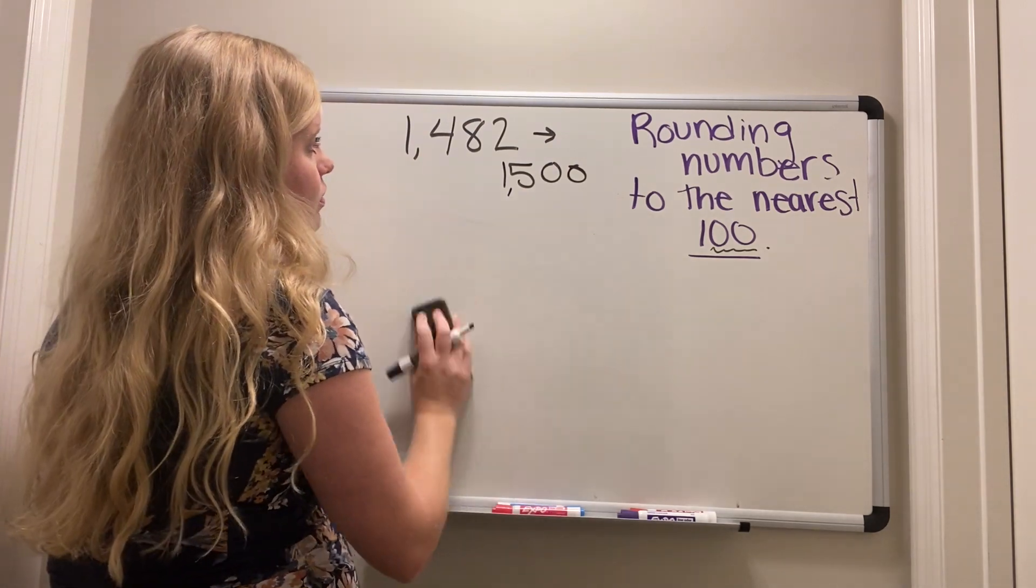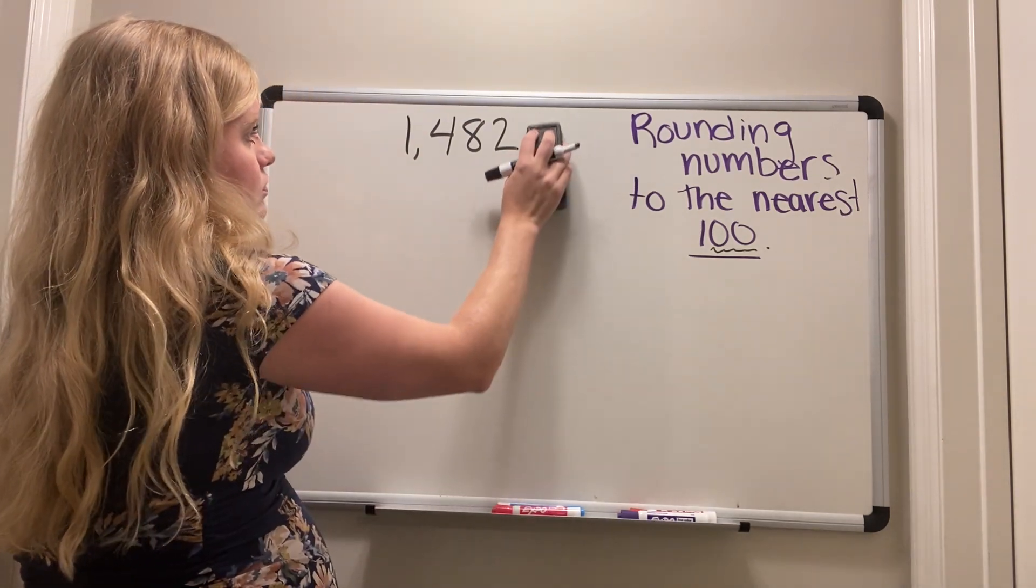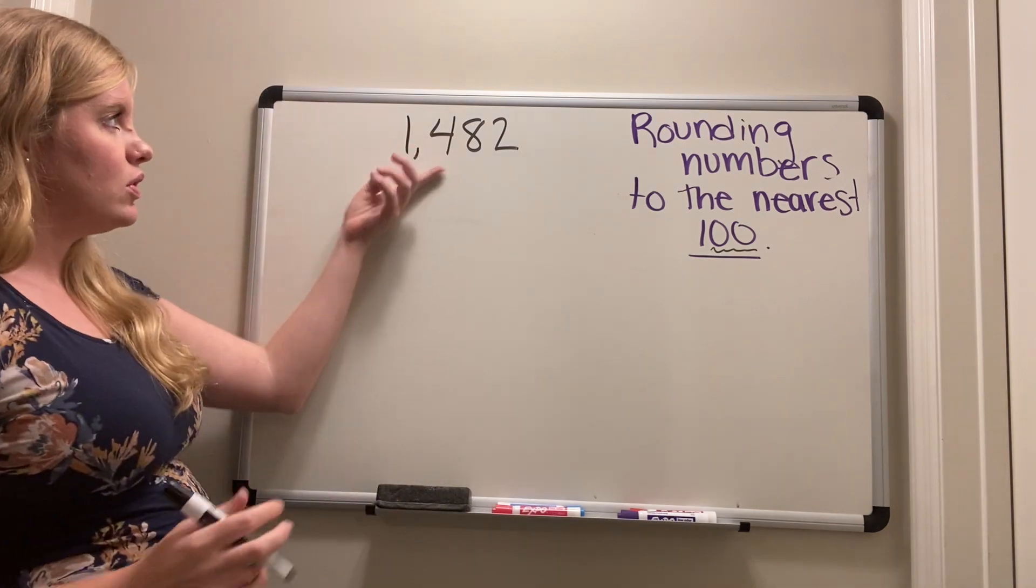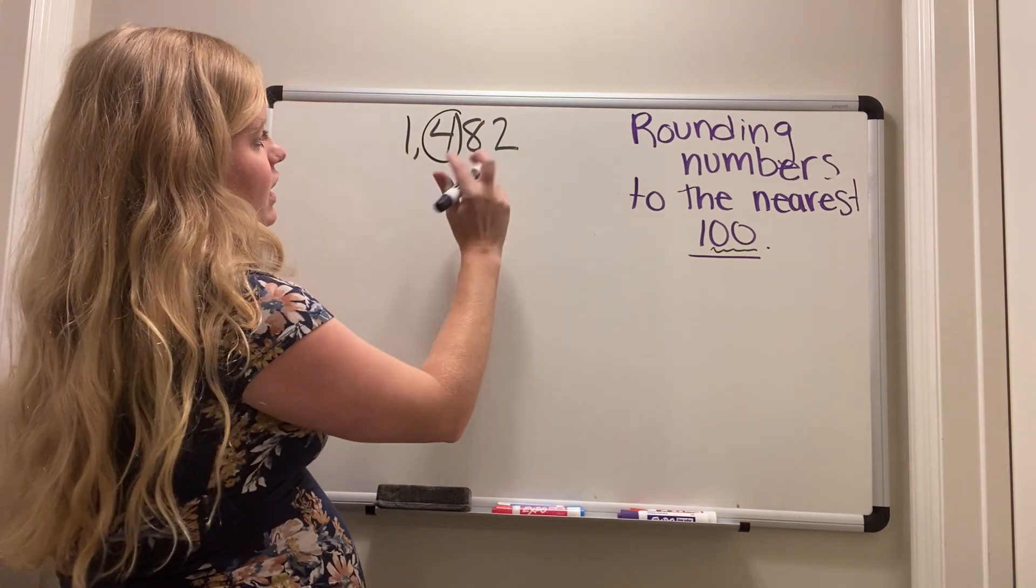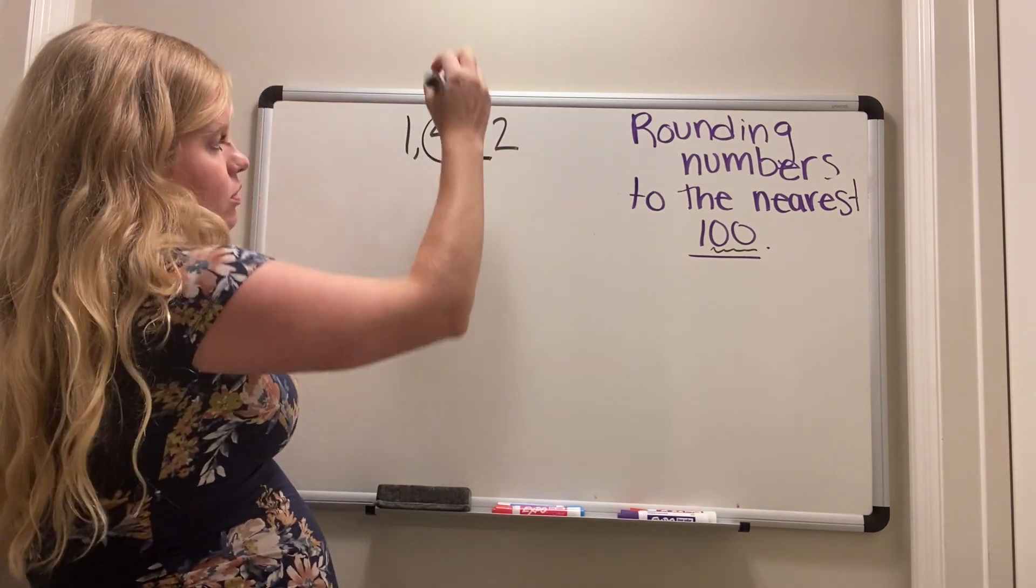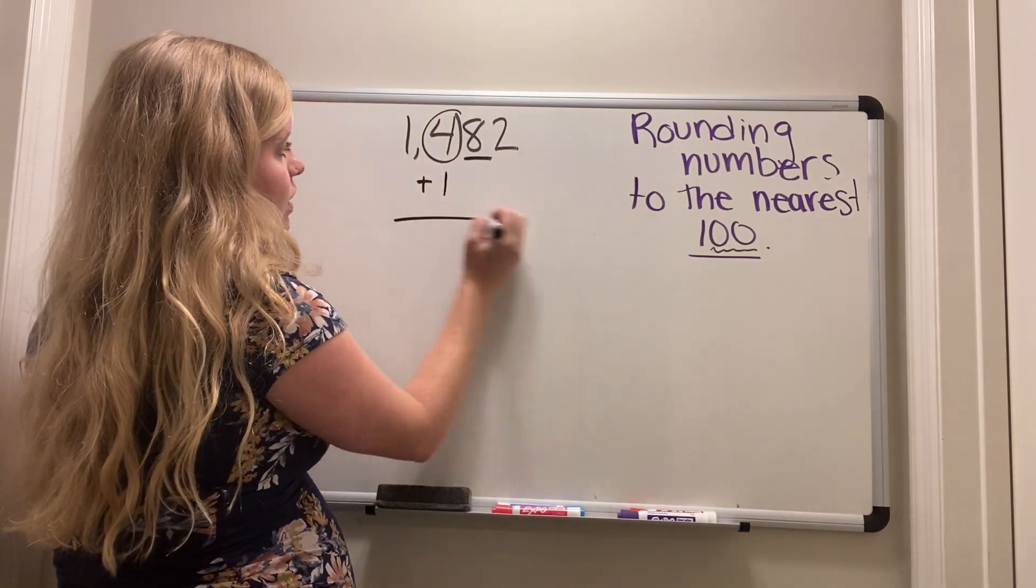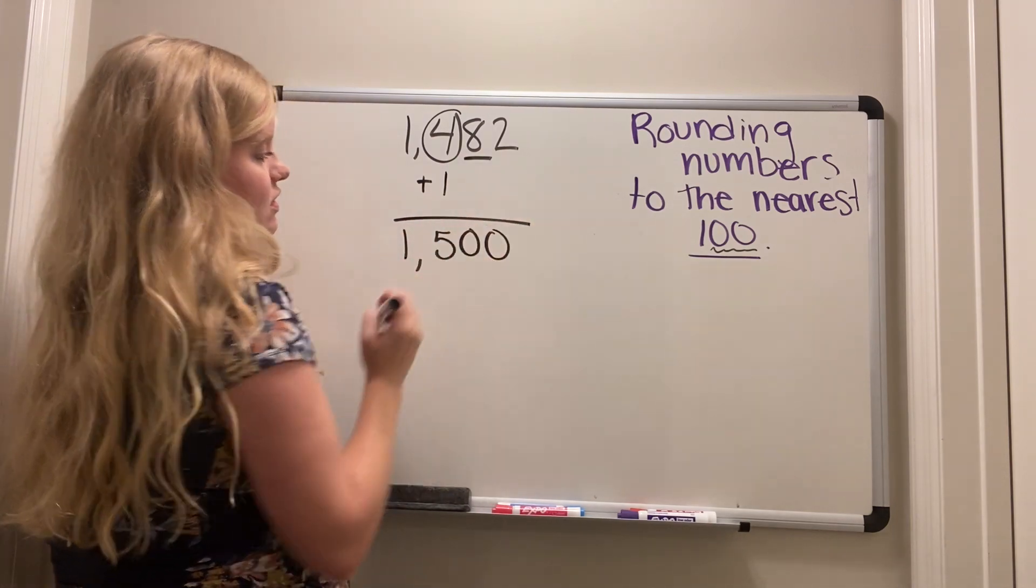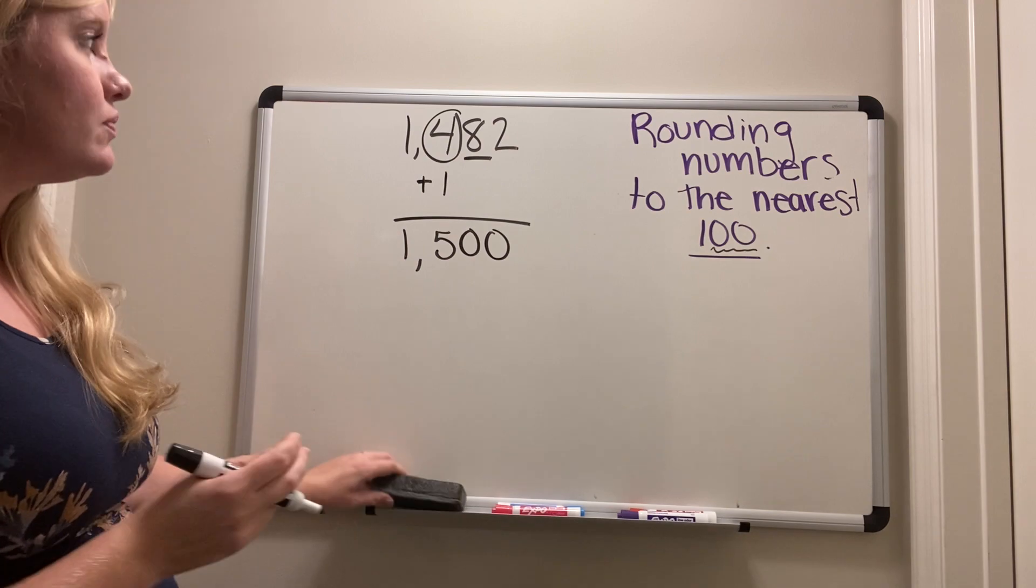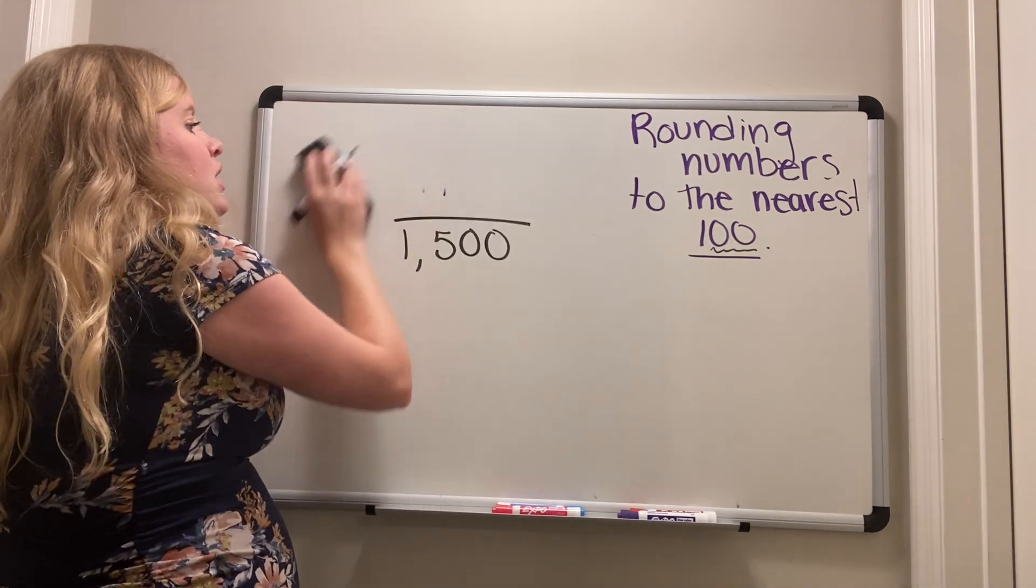If we were doing our poem, we say, we're looking at the hundreds place here because we're rounding to the nearest hundred. We look behind, we underline five or more. We add one more. Don't forget to add the zeros.